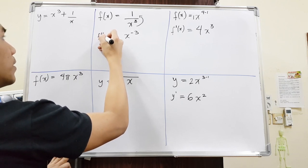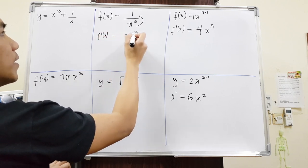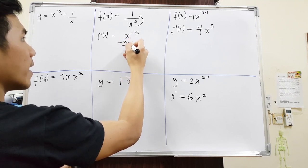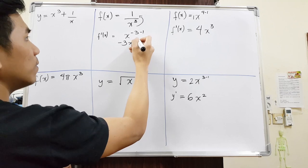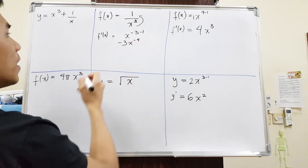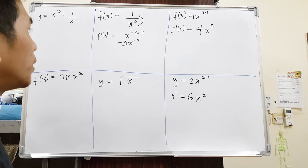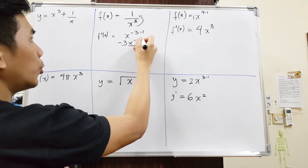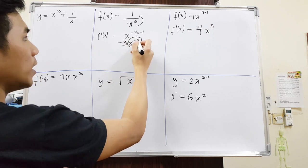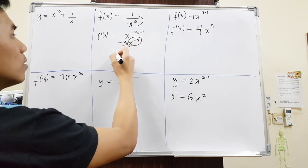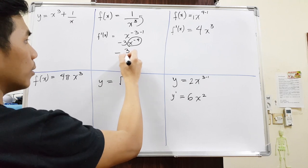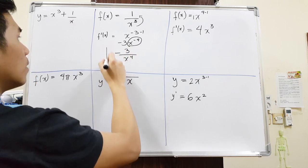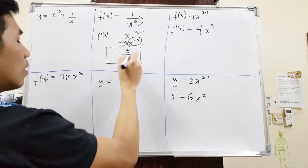So if we want to find the derivative, we bring negative 3 to the front side, giving negative 3x to the power of negative 4. This is the derivative, but if the question says negative powers are not allowed, all you have to do is bring the x with the negative power back down to the denominator. That is how you derive when the variable is on the denominator.